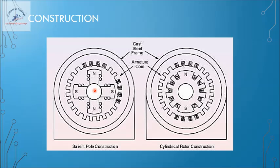In the cylindrical rotor construction, also called smooth cylindrical rotor or non-salient rotor, instead of having separate protruding structures there is a drum-like structure. The entire drum is wound by windings, making it a two-pole magnet, though four-pole, six-pole, or eight-pole versions are also possible. DC supply is given to the rotor, so it acts like an electromagnet with north and south polarities.